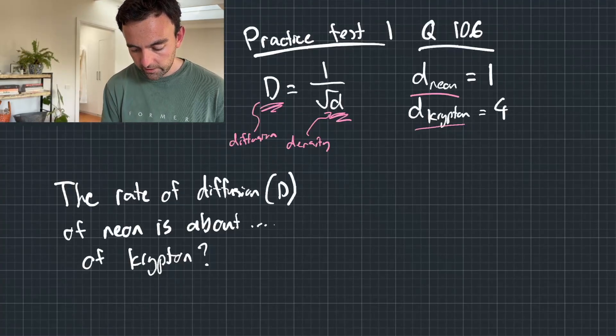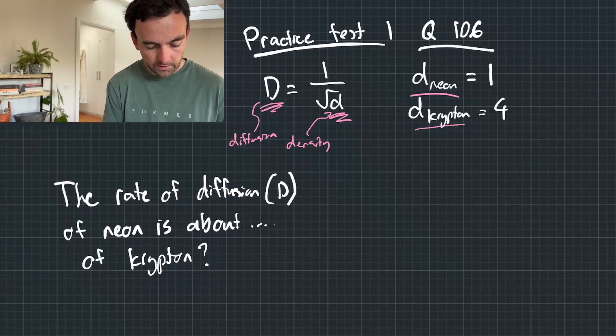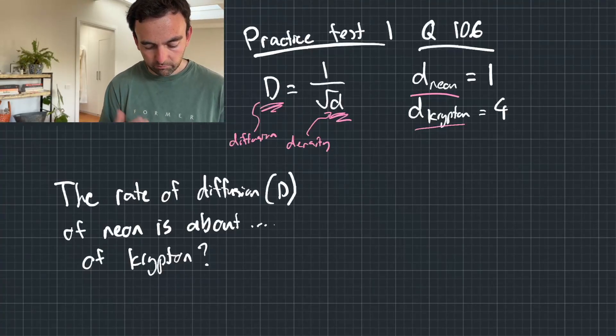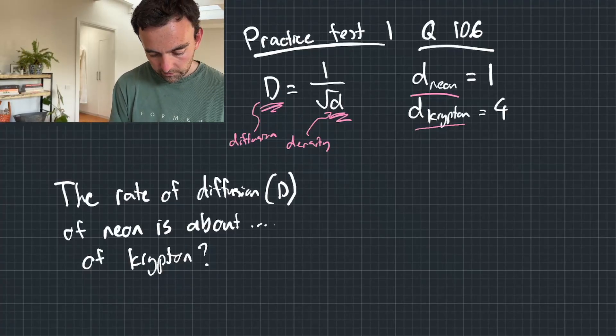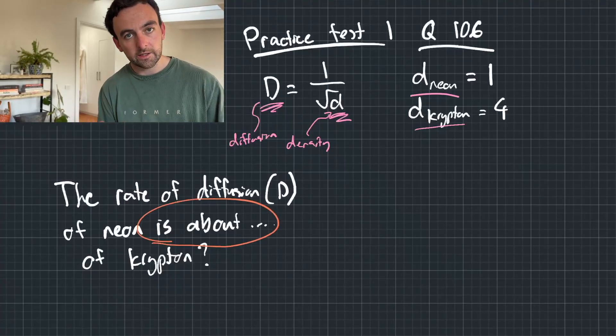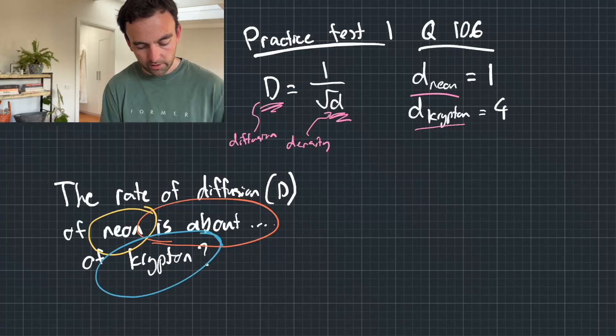Now I've just written out the diffusion, sorry, the densities of these variables over here. And the question is asking the rate of diffusion of neon is about blah, blah, blah of krypton. So if we go back, that is our colon. This is to the left and this is to the right.